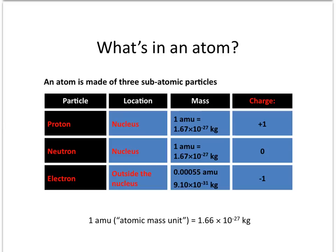The proton is found in the nucleus, as well as the neutron. They both have relatively the same mass of 1.67 x 10⁻²⁷ kg. However, they have different charges — the proton takes on the charge of positive 1, and the neutron is neutral, meaning it has no charge.